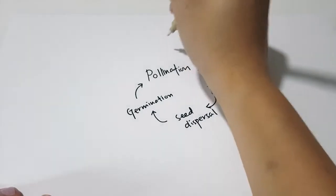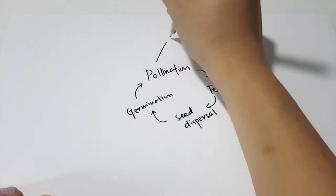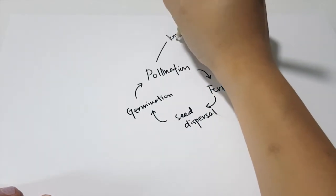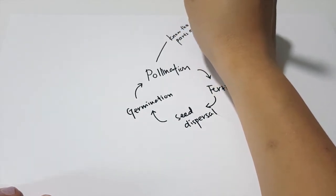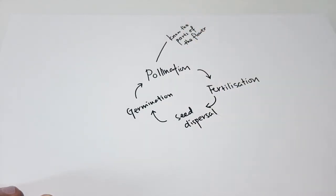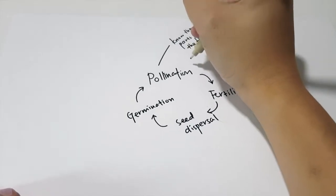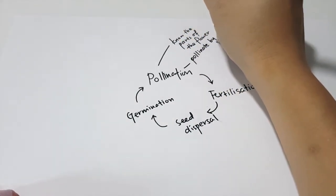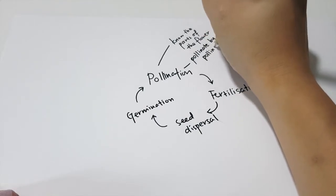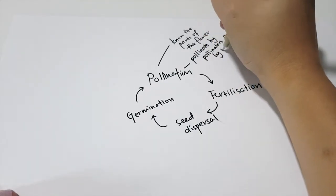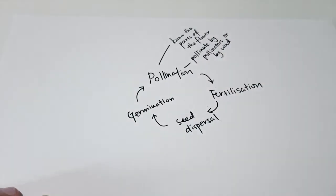Let's take a look at pollination first. For pollination, you have to know the parts of the flowers — the parts that are contributing to the reproduction in flowering plants — and also how pollination can occur in flowering plants, like by pollinators or by wind.